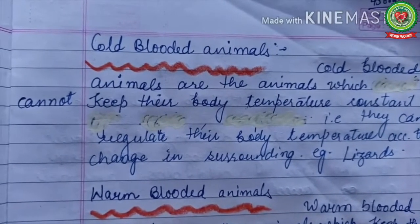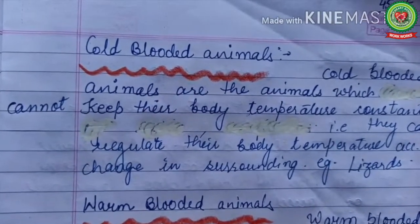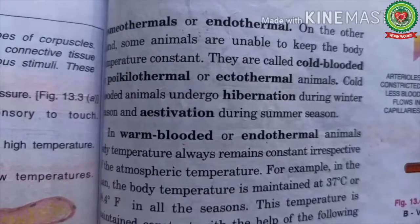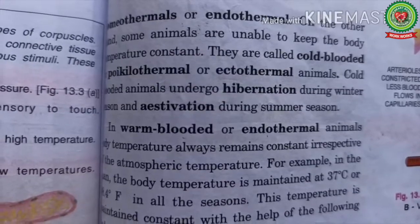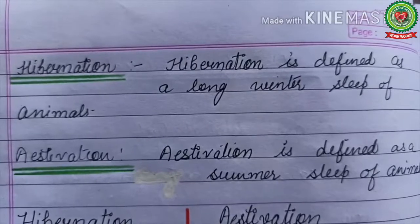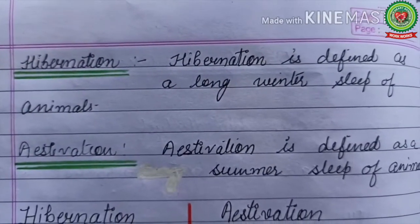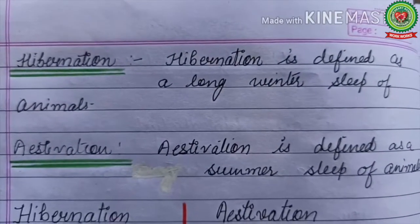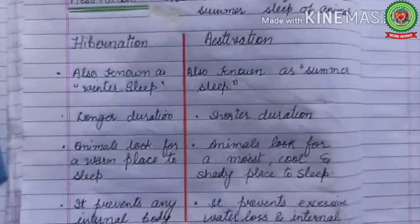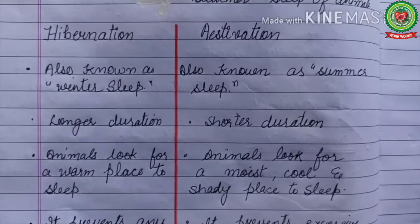Cold-blooded animals undergo hibernation during winter season and estivation during summer season. Hibernation is defined as a long winter sleep of animals, also known as winter sleep. Estivation is defined as a summer sleep of animals, also known as summer sleep.